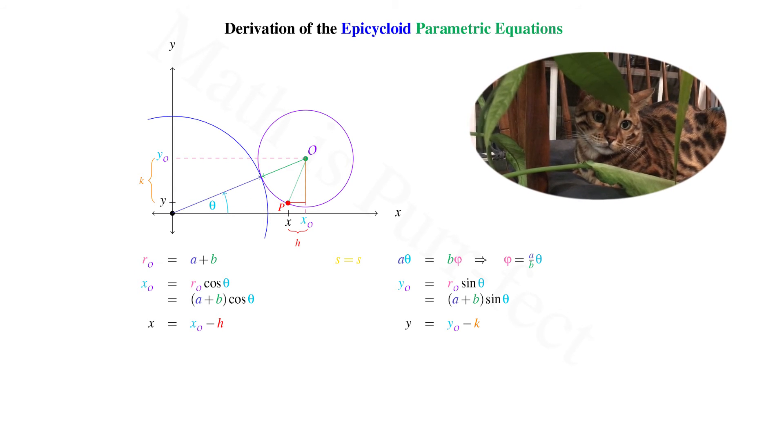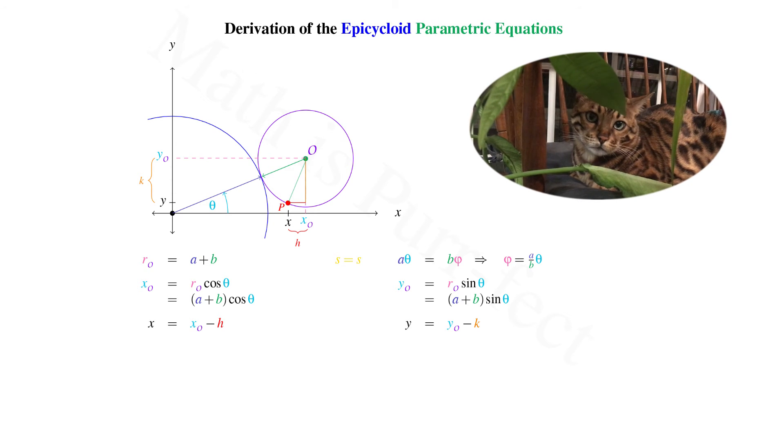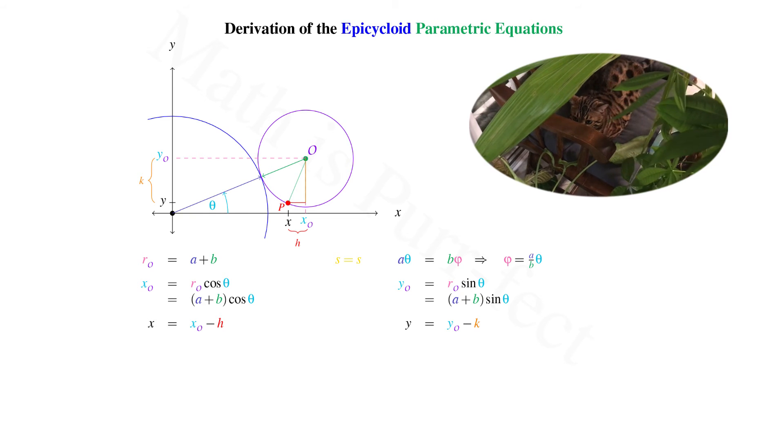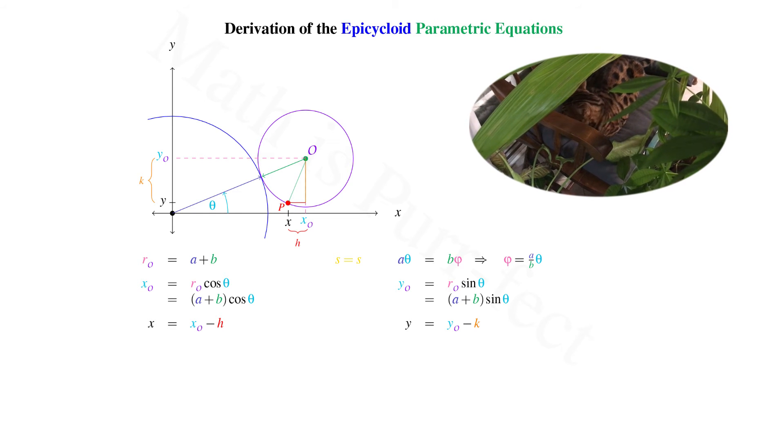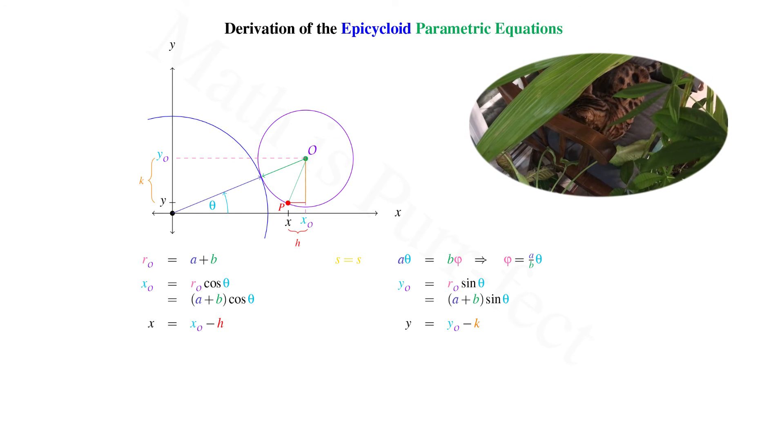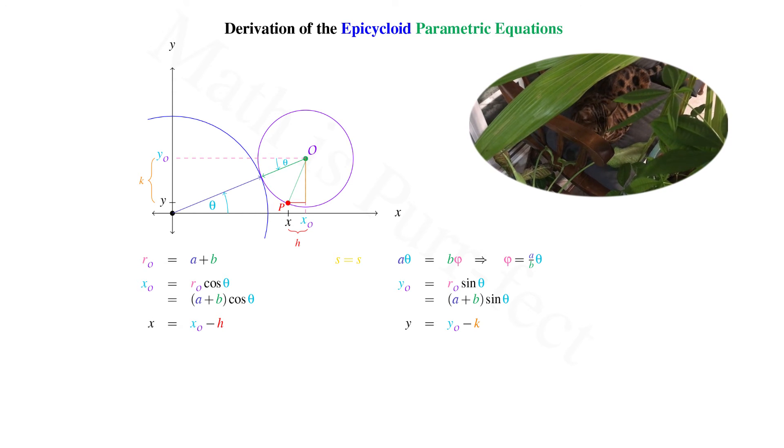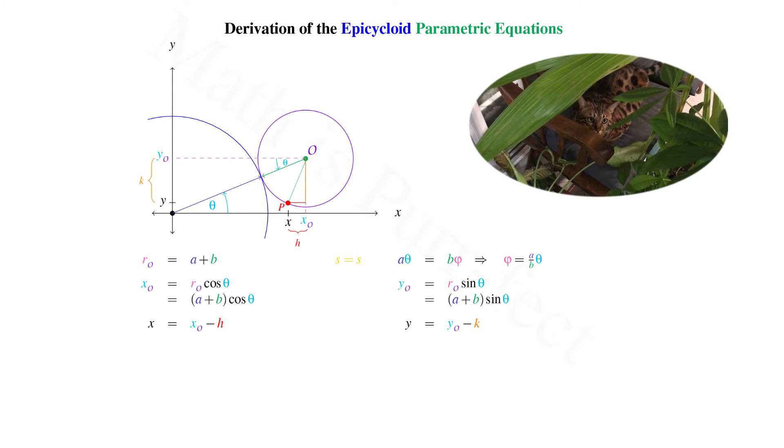In order to find both H and K, let's unclutter our image once again. I'm going to leave the red dashed line at Y sub O, as it's parallel to the X axis. Using the fact that alternate interior angles are equal, we have that the angle made from the horizontal at Y sub O down to R sub O, our radius from the origin to O, is also theta.